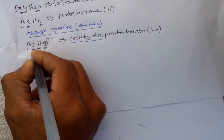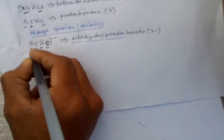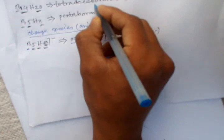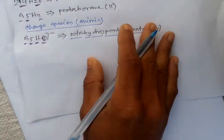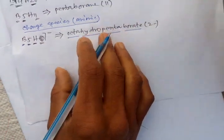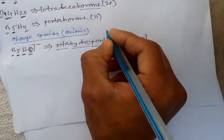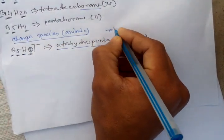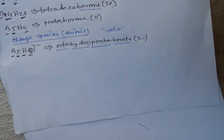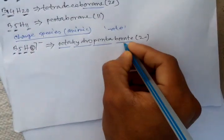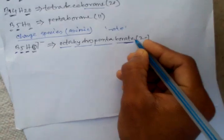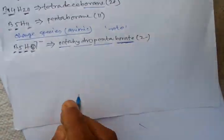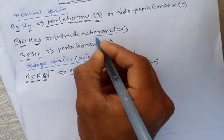The number of boron atoms is 5, penta and borate. For neutral species we use boron, and for charged species, borate. The name ends in 'ate' for charged species. You can use 'ate' for charged species and boron for neutral species.